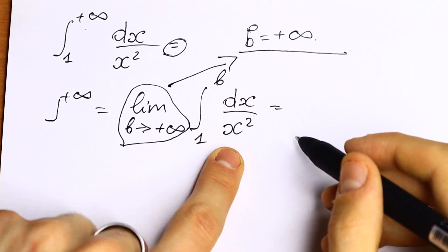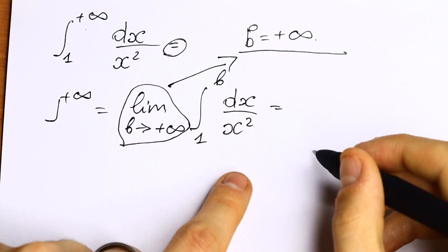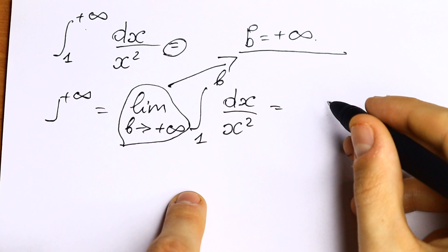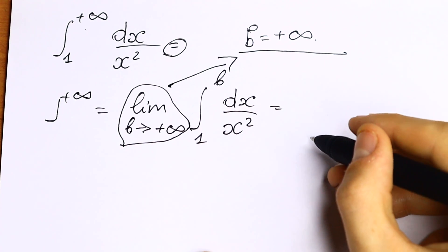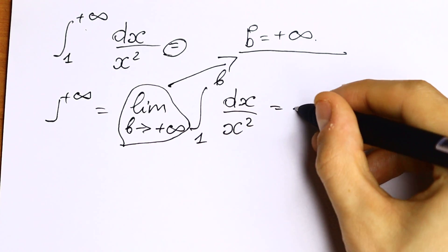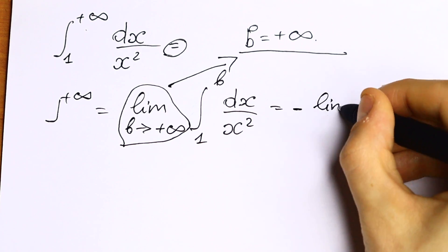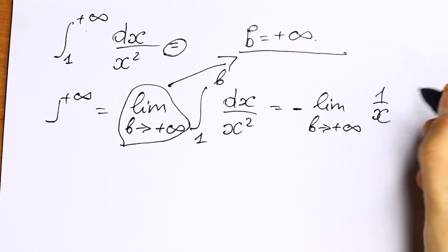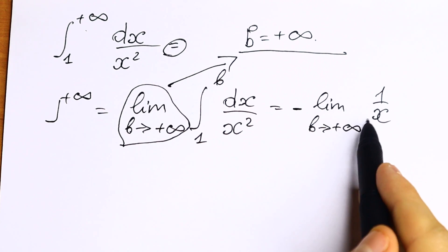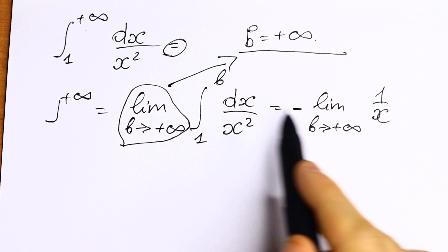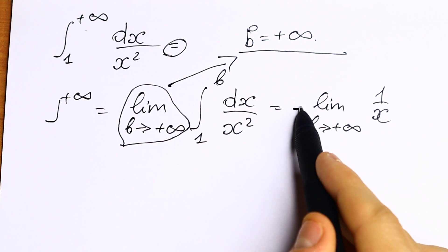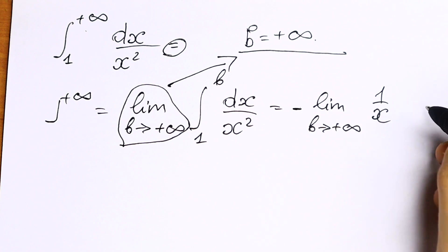This is our simple case because we all know that the derivative of 1 over x, if you're talking about derivative, equals minus 1 over x squared. So to find this derivative we need to put minus, and this limit of course, b approaches plus infinity, of 1 over x. Because if we find the derivative of 1 over x, it will be minus 1 over x squared. We have 1 over x squared, and with this minus it will be plus. So this is good for us.